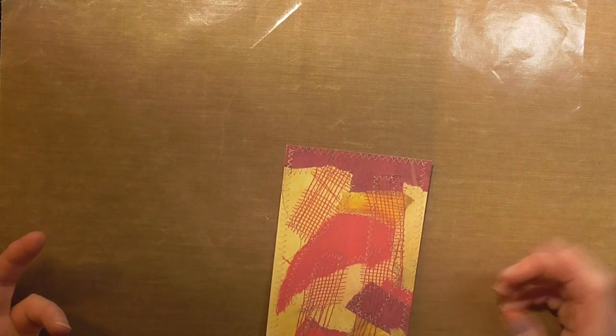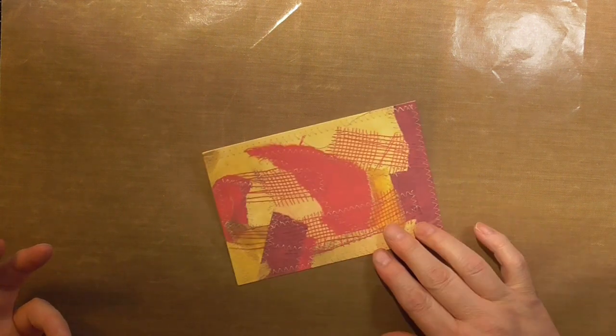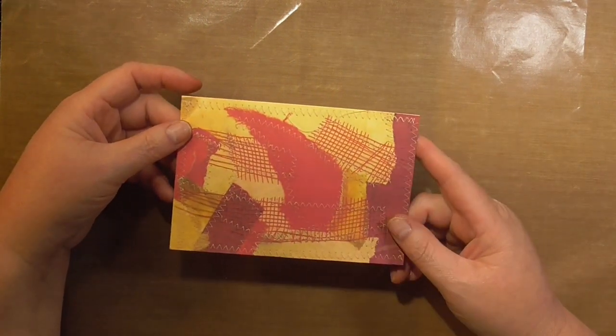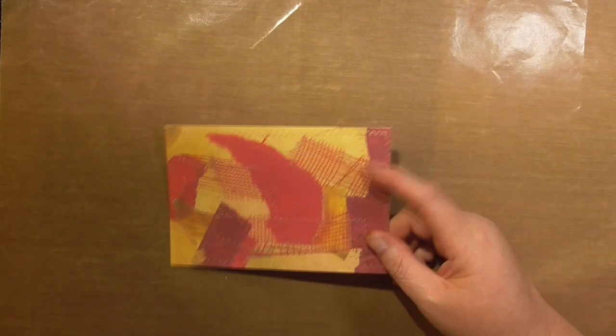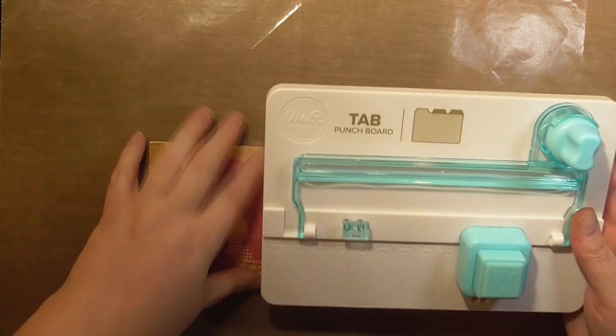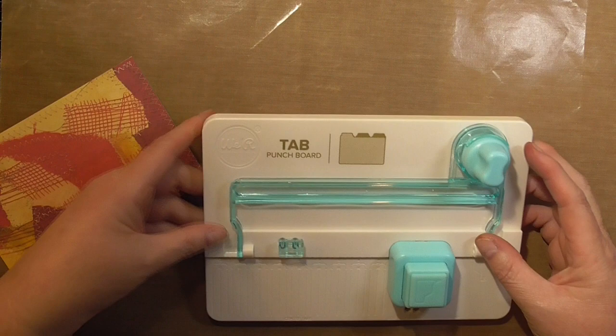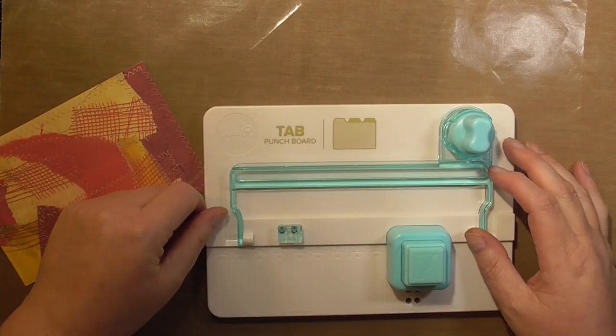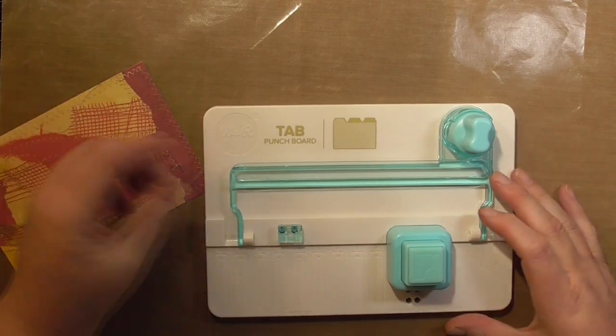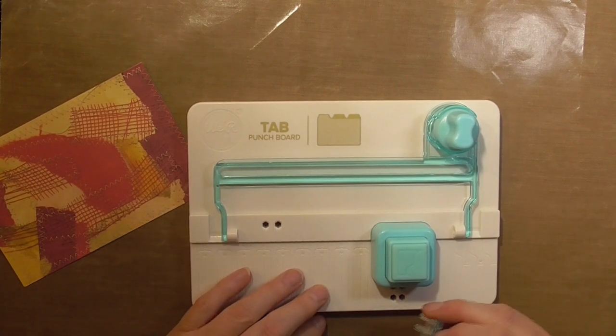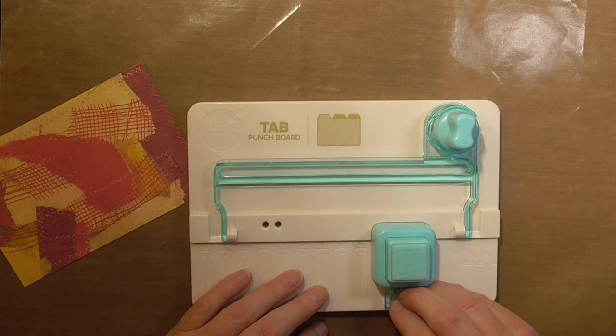So what we're going to do now is try making some mini file folders using the four by six journal card. Now I'm fortunate enough in that I've got this tab punch board that I'm going to use and that's from We Are Memory Keepers. I'll show you how to use this, but if you don't have that then I will show you another way how you can make tabs on the journal cards.